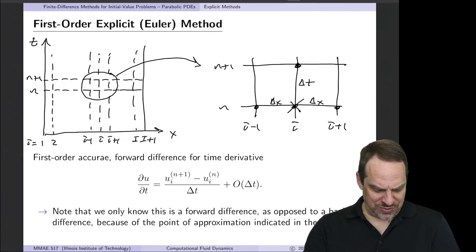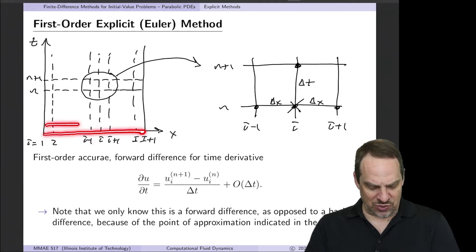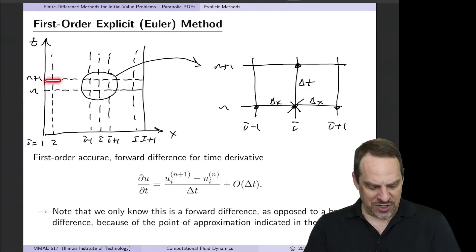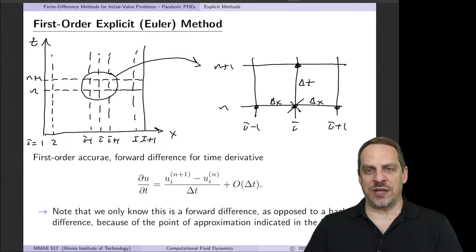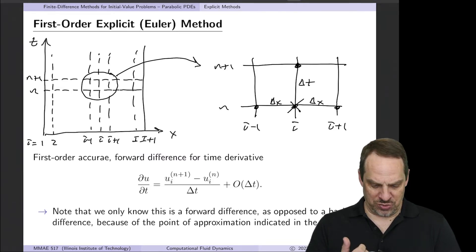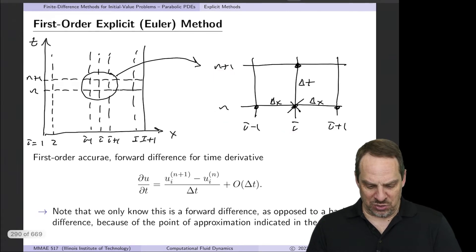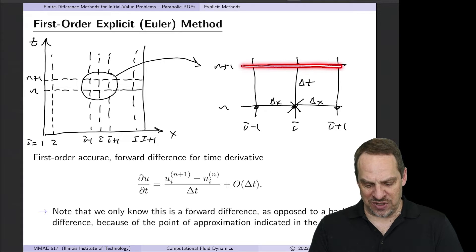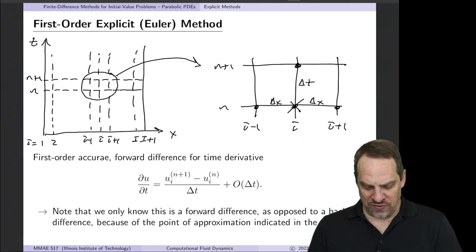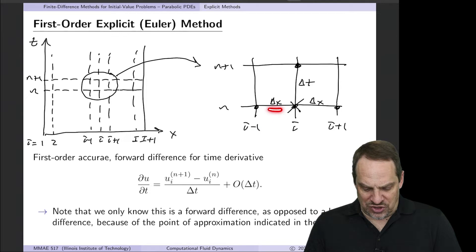We have our x spatial dimension and time going upward, and we march the solution forward from the initial condition at t=0 in increments of delta t. A generic time step is the nth, and the next one a delta t away is the (n+1)th. Our spatial domain is discretized starting with i=1, then 2, up to capital I+1, giving I intervals and I+1 grid points. Zooming in on the generic i, n and n+1 location: the nth time level is the previous one (already known), and we seek the solution at the (n+1)th level, a delta t away. Points i, i+1, and i-1 are each a delta x apart.